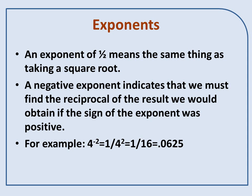A negative exponent indicates that we must find the reciprocal of the result we would obtain if the sign of the exponent were positive. An example is 4 to the minus 2 would be 1 divided by 4 squared, or one-sixteenth, which is equal to .0625 in decimal form.